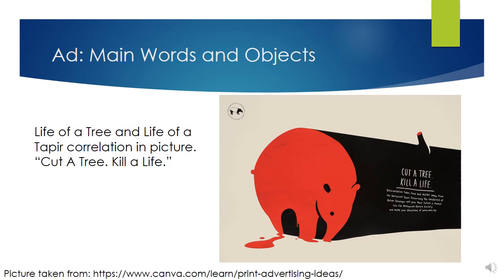The ad correlates a chopped down tree with a tapir by the main words and main objects used. The main object of this ad is a log that is dark brown with a bright red in its core. The bright red is probably blood, shaped like a tapir with some red drippings — a simple drawing for the audience to see and absorb quickly.